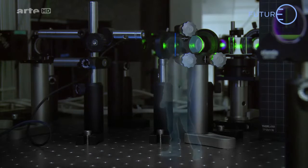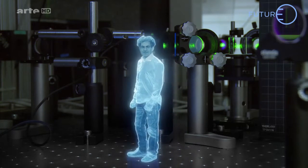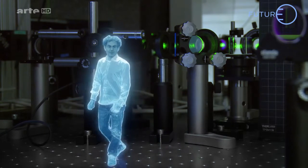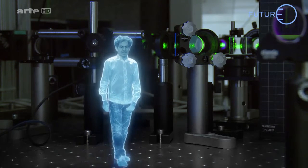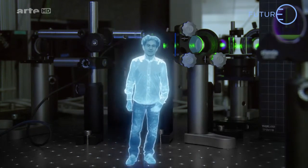C'est ici, sur ce banc laser, que les chercheurs tentent de réaliser le faisceau idéal afin d'obtenir un résultat parfait pour ces nouvelles cellules photovoltaïques. Mais bien sûr, ils n'utilisent pas n'importe quel laser. Nous utilisons en général des lasers infrarouges car cette longueur d'onde est pratique pour fondre le métal.